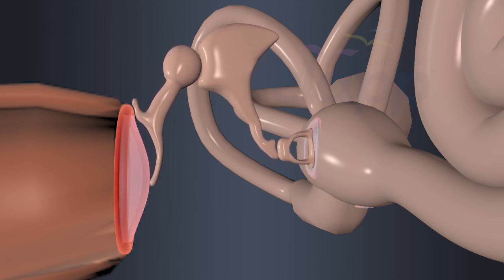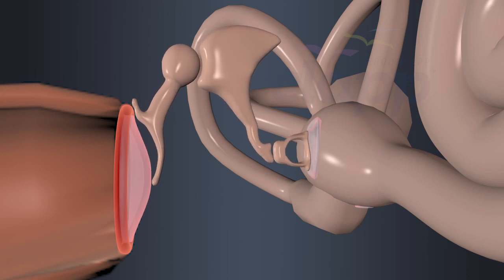When the sound waves reach the tympanum, it vibrates in resonance with the sound waves. This amplifies the sound and transmits it to the middle ear.